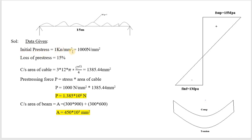Given data: initial pre-stress = 1 kN/mm² = 1000 N/mm², loss of pre-stress = 15%. First, calculate the area of the cables: 3 cables × 12 wires × (π × 7² / 4) = 1385.44 mm². This is the total area of all three cables combined.